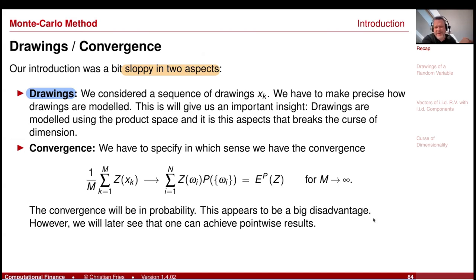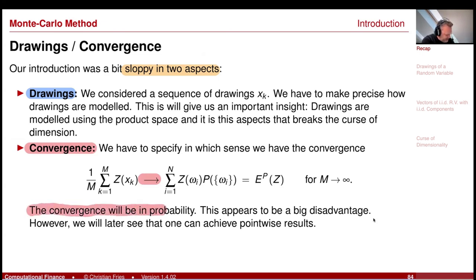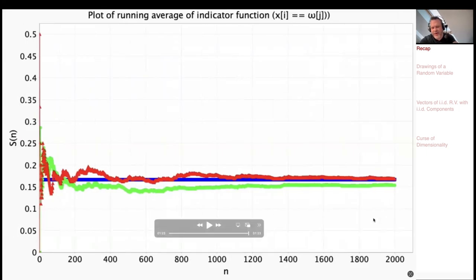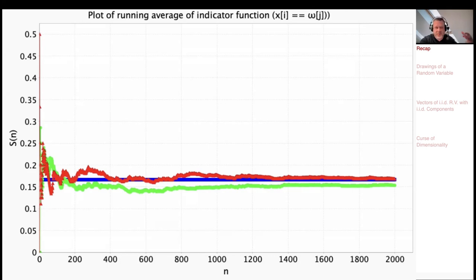Another aspect where I was sloppy was actually the convergence — in which sense do we have this convergence? Unfortunately, this convergence will be in probability. If you go back to our picture or the long-running sequence, in the limit we converge with probability one. So there's a null set where we have a sequence that does not converge.